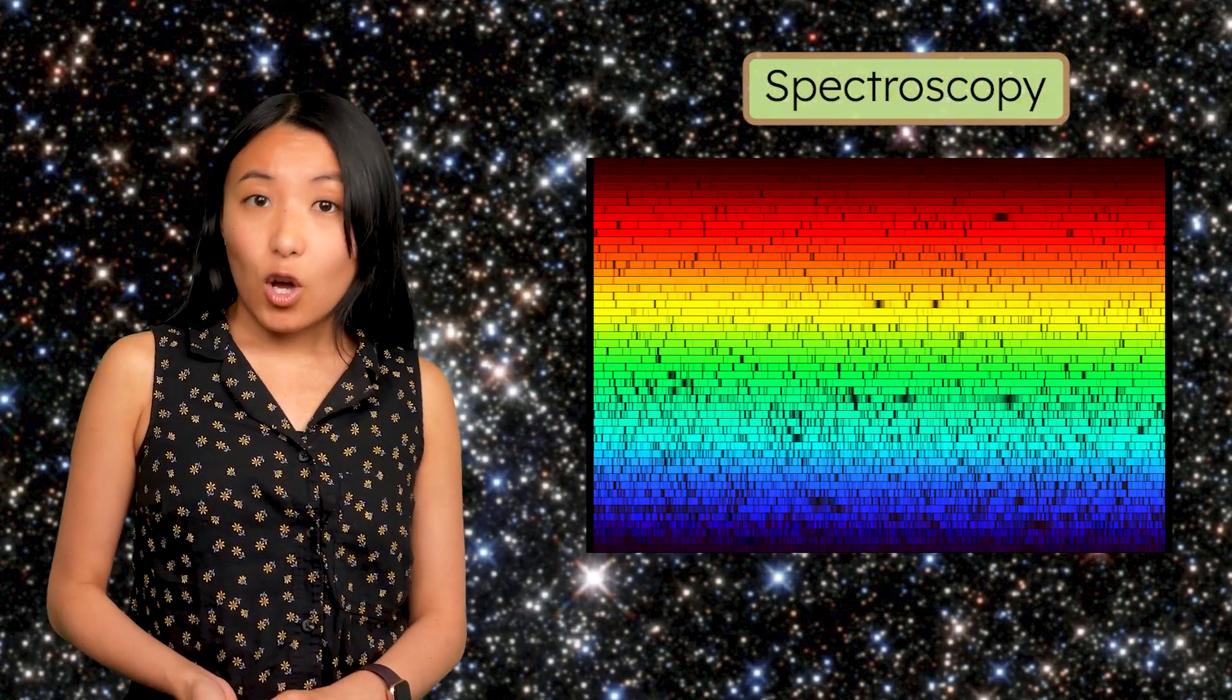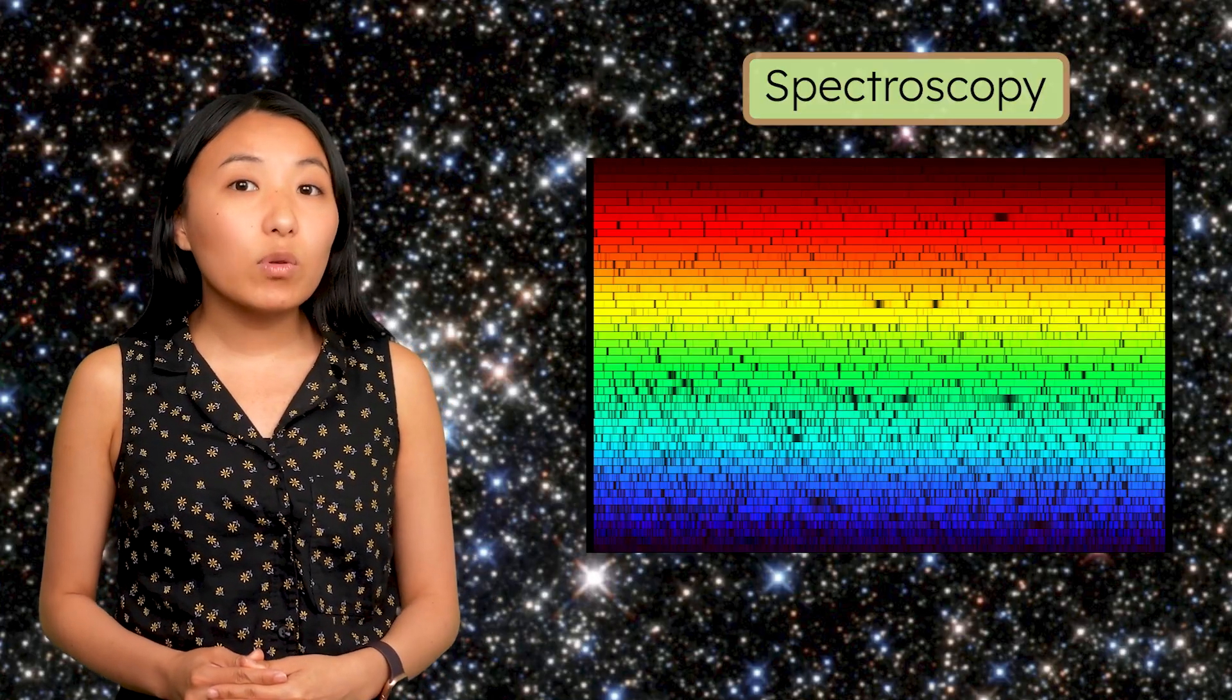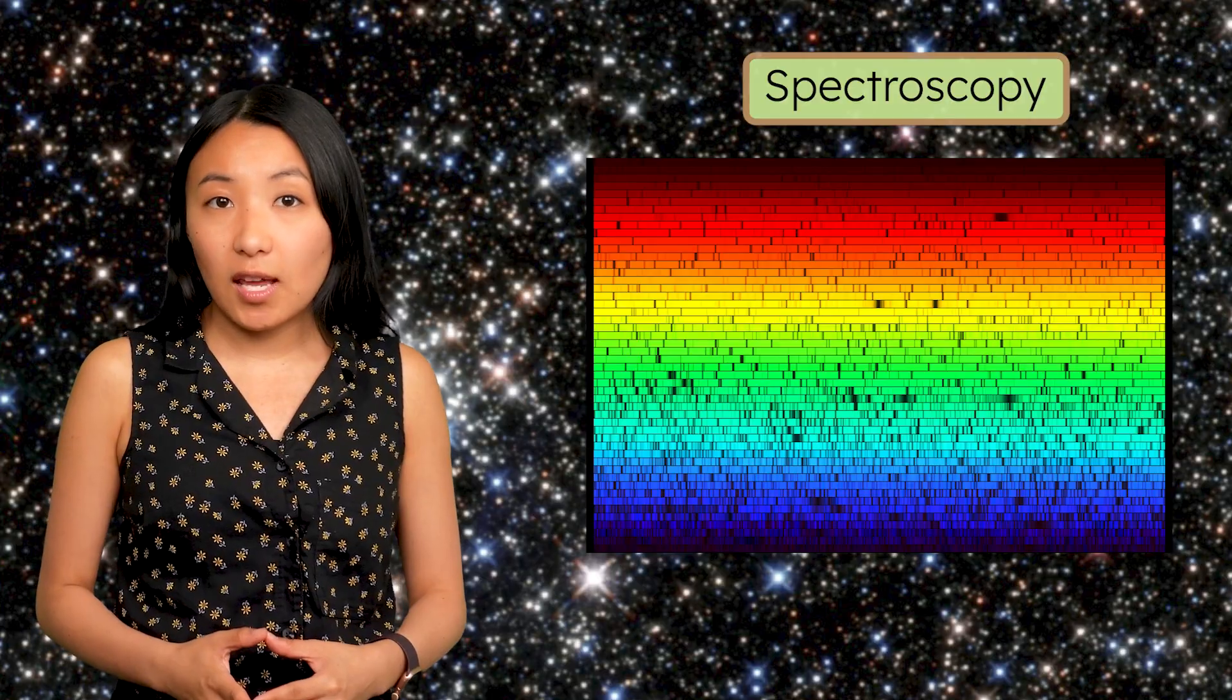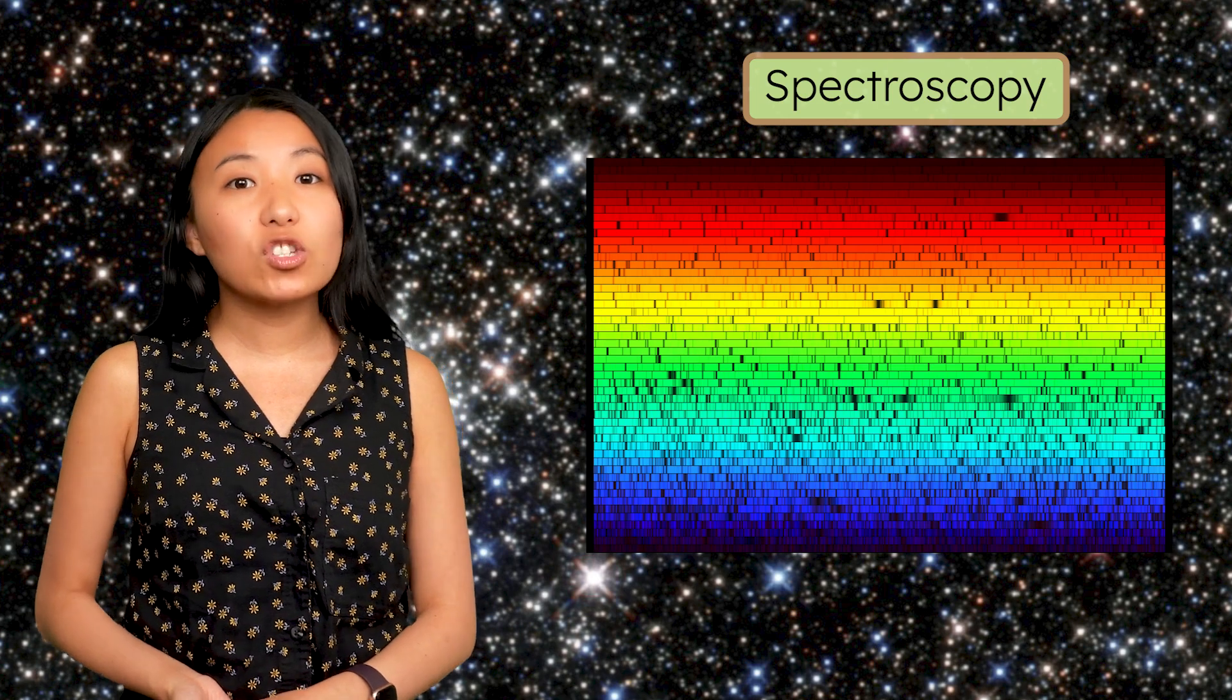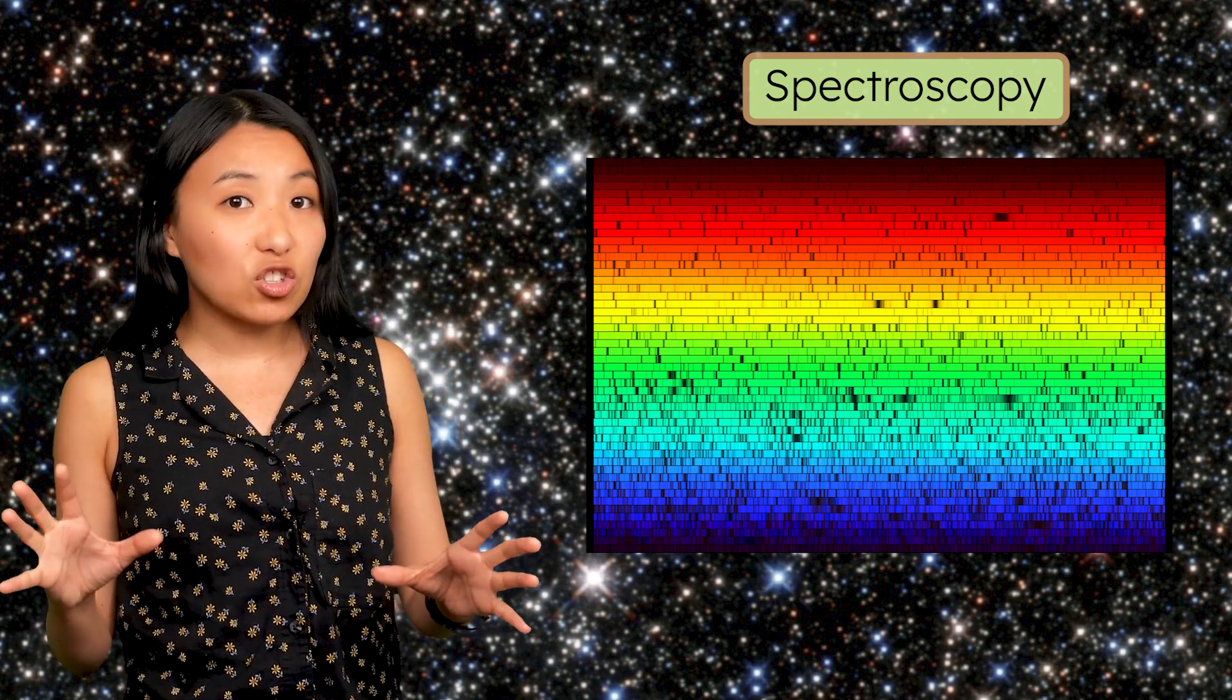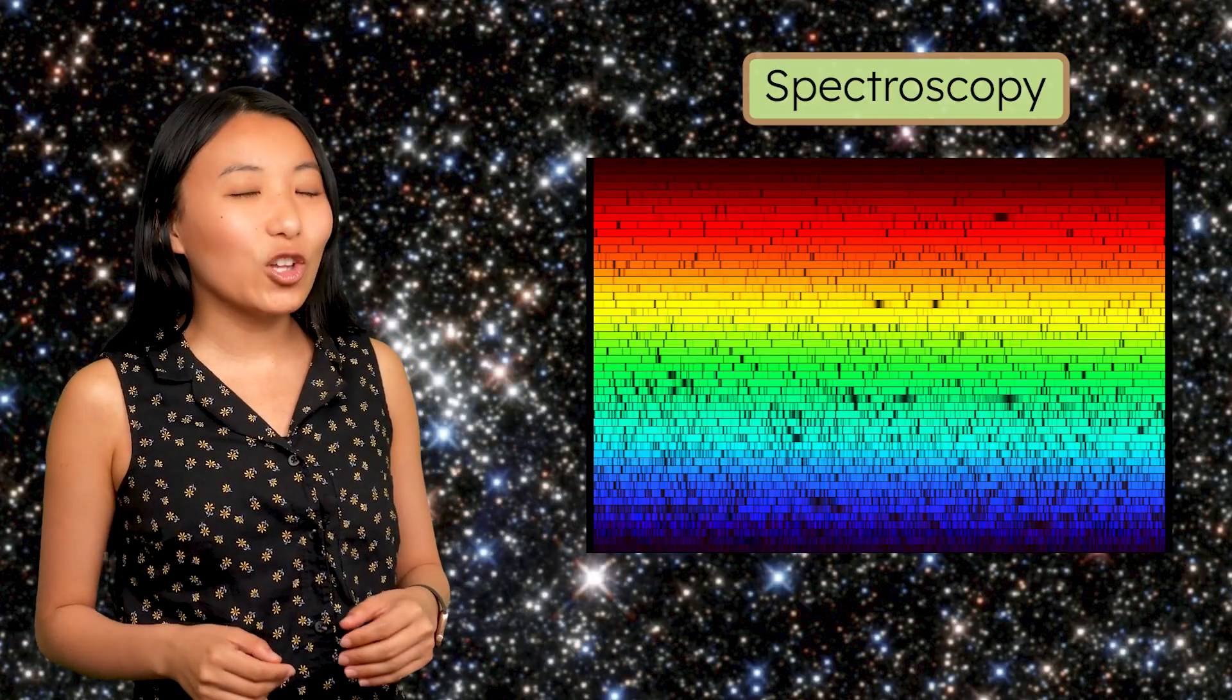How do we even know all of this about stars we'll never visit? Do you remember learning about spectroscopy? When we pass starlight through a spectroscope, we get a rainbow of colors with tiny dark lines. Those lines are like chemical barcodes, telling us exactly which elements are in a star's atmosphere. It's how we read starlight to figure out what stars are made of. Scientists have been able to use all of this information to piece together how stars live and die.